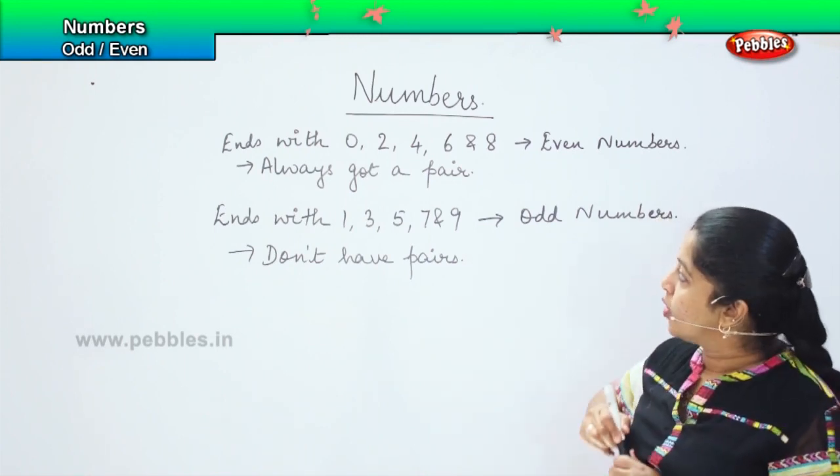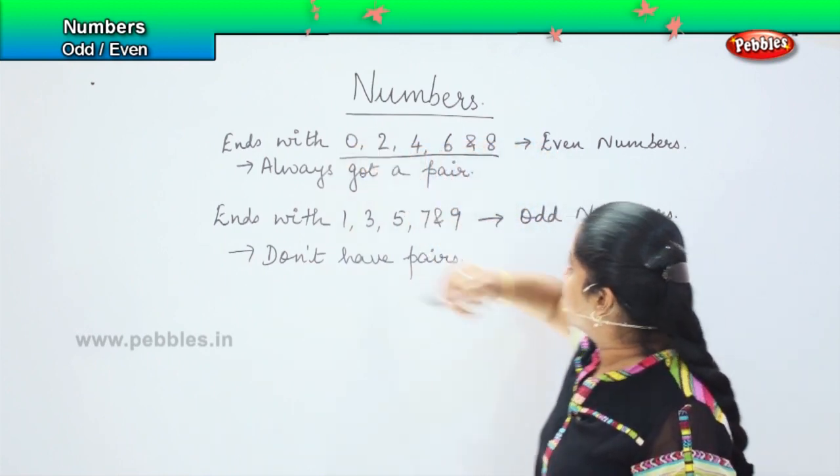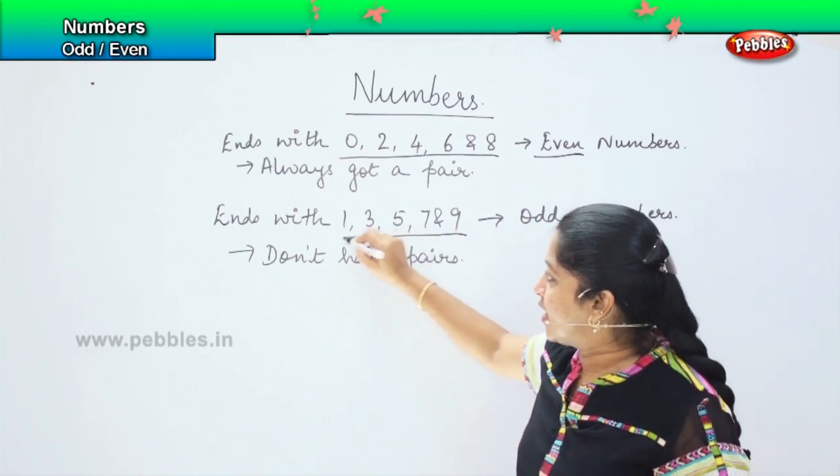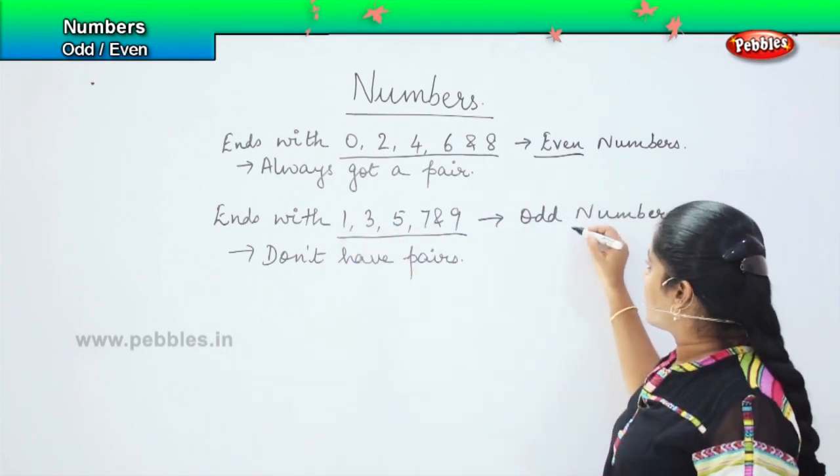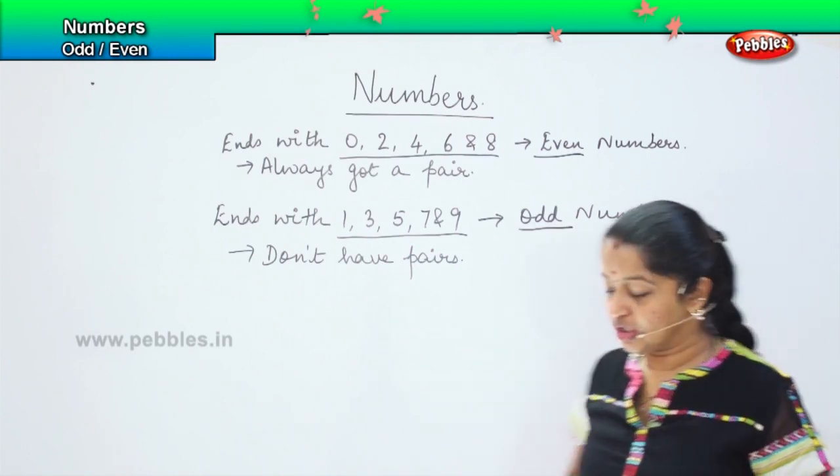So, those numbers which end with 0, 2, 4, 6, and 8, they are even numbers, and numbers ending with 1, 3, 5, 7, and 9 are called odd numbers. Is it clear, children?